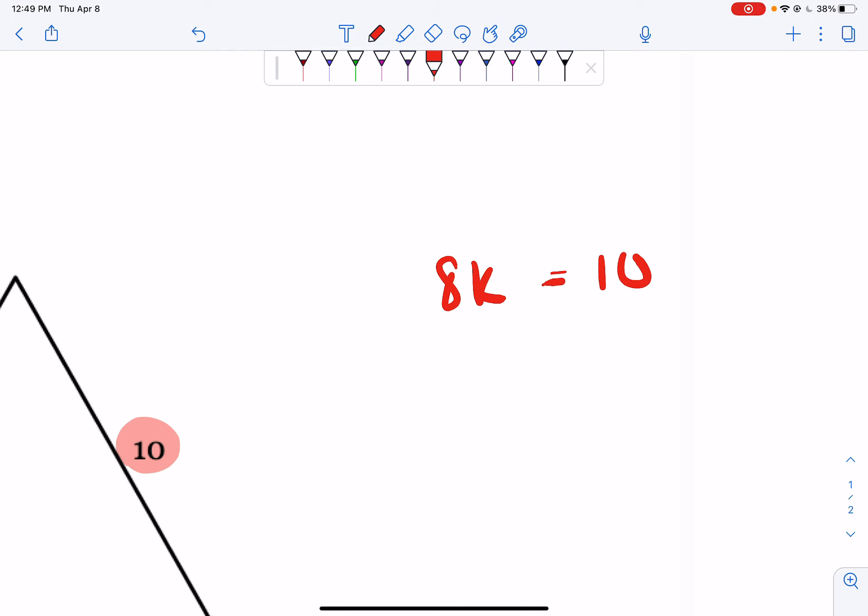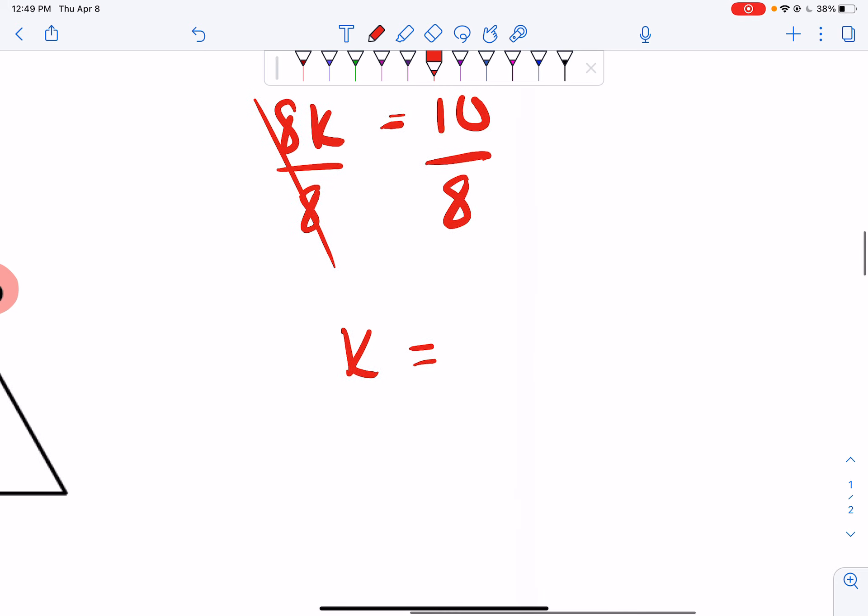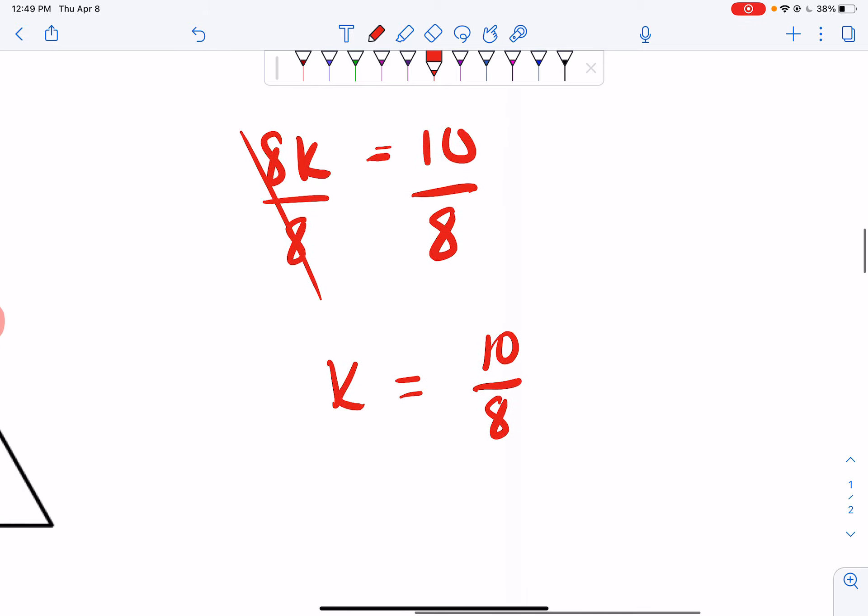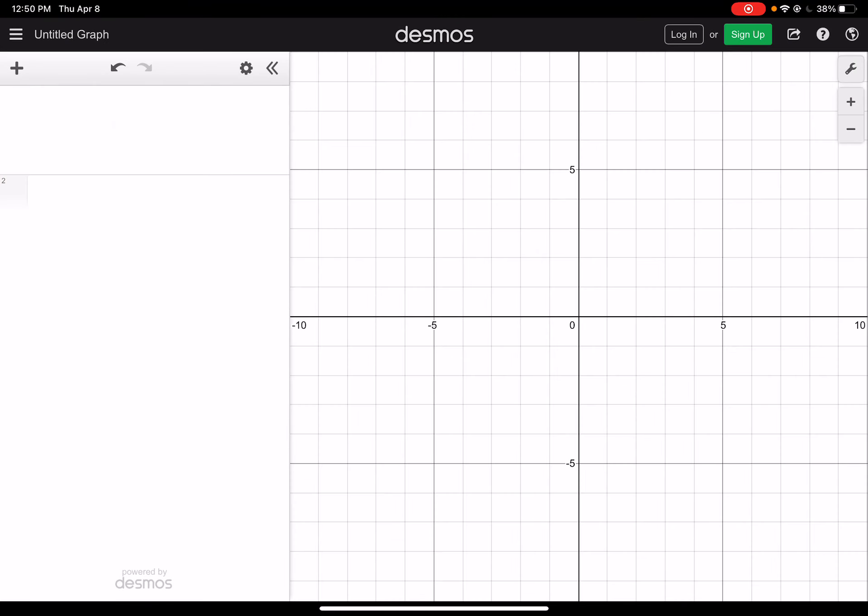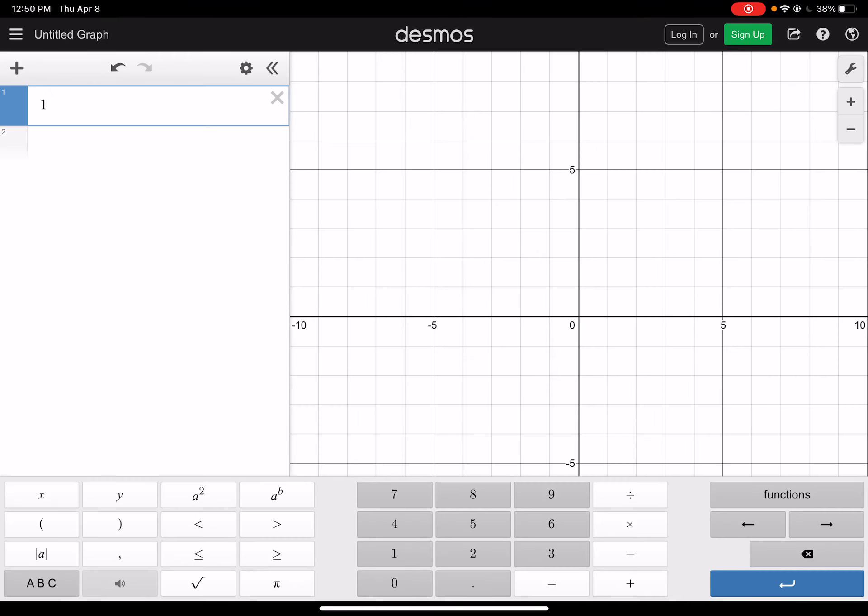So what I'm going to do is I'm going to set up an equation where I have 8k equals 10. Because remember, k means your scale factor. So I want to solve for my scale factor. One step equation, divide by 8 on both sides. And I get k equals 10 over 8. But the thing is, I can actually reduce that. So I'm going to go to Desmos. I'm going to type in 10 divided by 8. Not 1 over 8. 10 divided by 8.